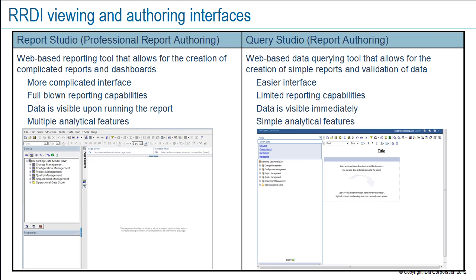Let's compare Report Studio and Query Studio. They're both web-based report authoring tools, but Report Studio allows you to create multiple page complicated reports and dashboards, while Query Studio allows you to create simple queries and reports and to validate data. Report Studio has a more complex interface and more reporting capabilities and features than Query Studio. In Report Studio, you create a report and then run it to see the data, but in Query Studio, as soon as you create the queries, the query is run and the data is generated and visible. Report Studio also has more analytical features than Query Studio.